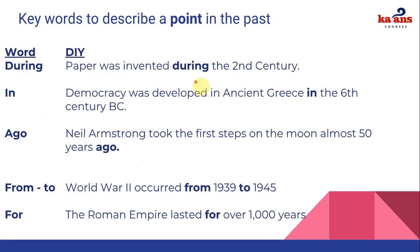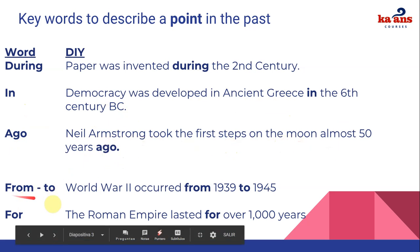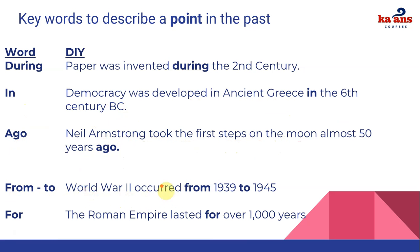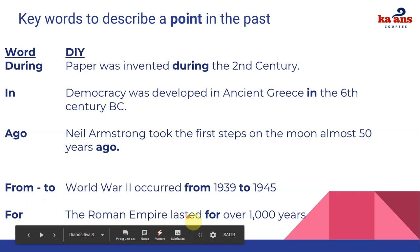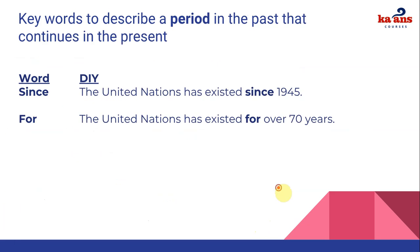For example: paper was invented during the second century; democracy was developed in ancient Greece in the sixth century; Neil Armstrong took the first steps on the moon almost 50 years ago; World War II occurred from 1939 to 1945; and the Roman Empire lasted for over 1,000 years.